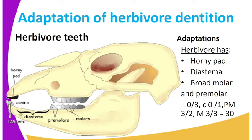We have the I which represents the incisors, the C which represents the canines, the P which represents the premolars, and the M which represents the molars. In our diagram, the incisors are 0 on the upper jaw and 3 on the lower jaw. The canines are 0 on the upper jaw and 1 on the lower jaw. The premolars are 3 on the upper jaw and 2 on the lower jaw. And finally, the molars are 3 on the upper jaw, giving a total of 30 teeth.